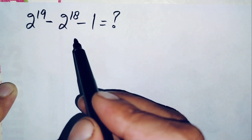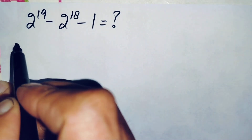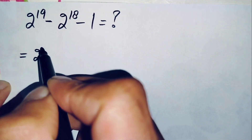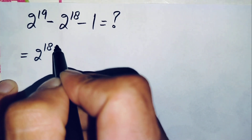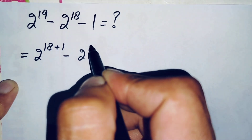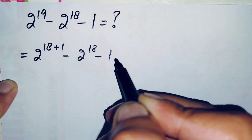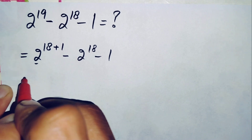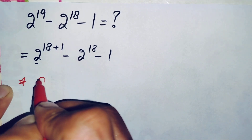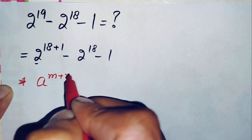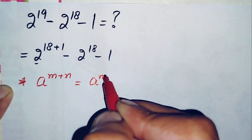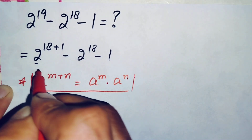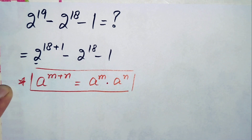We will try to find the value of this simplification math problem. We will do some changes in the first term — we can write 2 raised to power 19 as 2 raised to power 18 plus 1, minus 2 raised to power 18, minus 1. Here in this first term we will use an exponential math property: a raised to power m plus n can also be written as a raised to power m times a raised to power n.